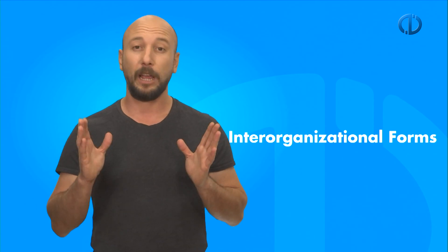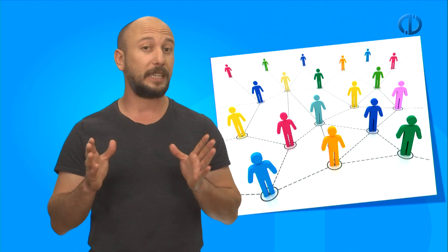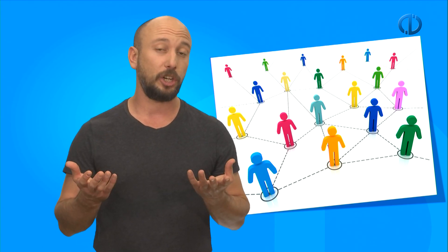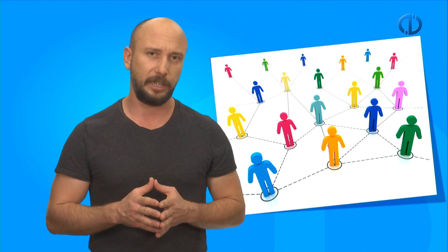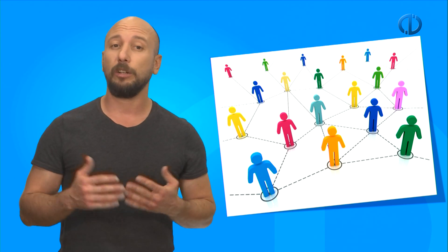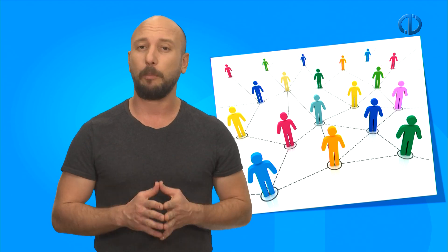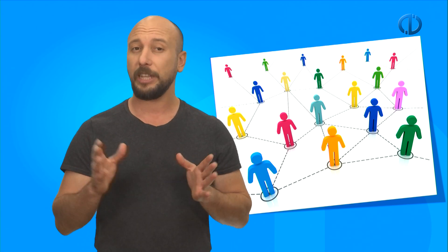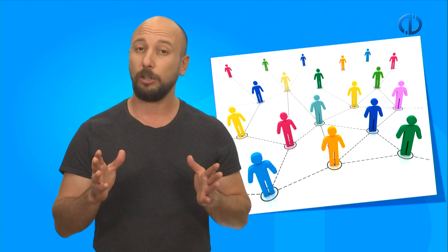Usually, there is a core entity which controls or coordinates the member companies financially or managerially. In the 1980s, because of decreasing costs of finding external suppliers through advancements in information and communication technologies, some companies began to subcontract a part of their activities. Gradually, a new organizational form emerged called the network form that combined legally separate companies along a value chain into a loosely integrated whole. There are three types of network form: the dynamic, stable, and internal network forms.